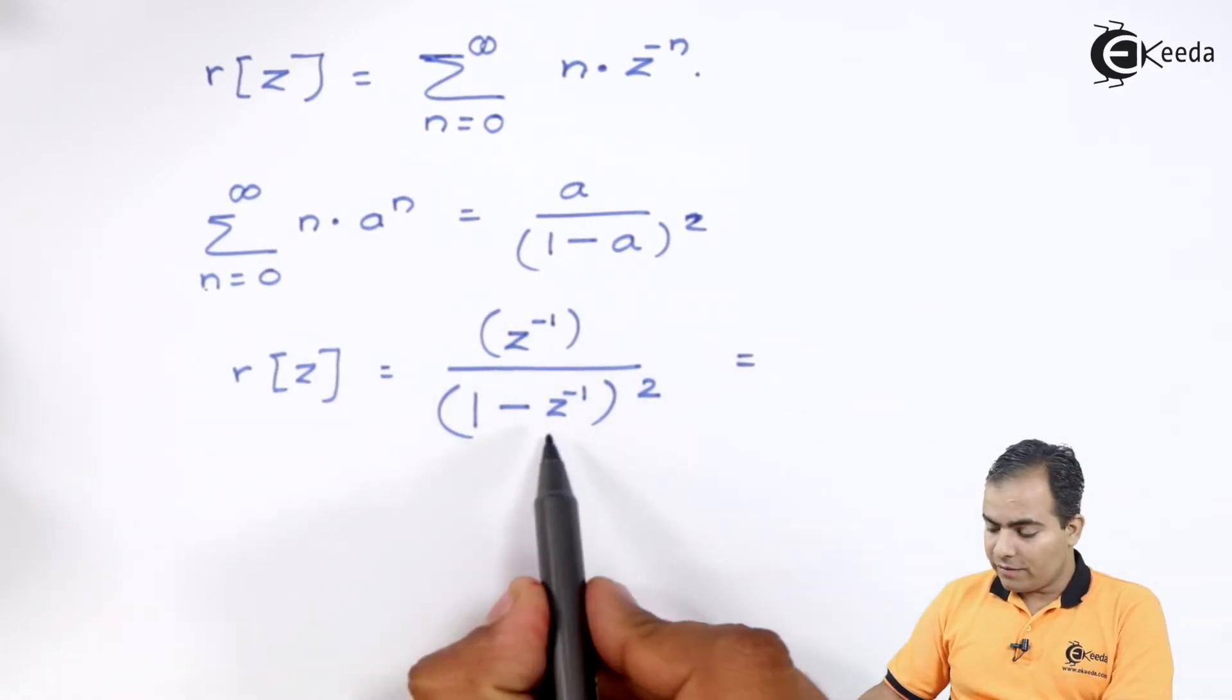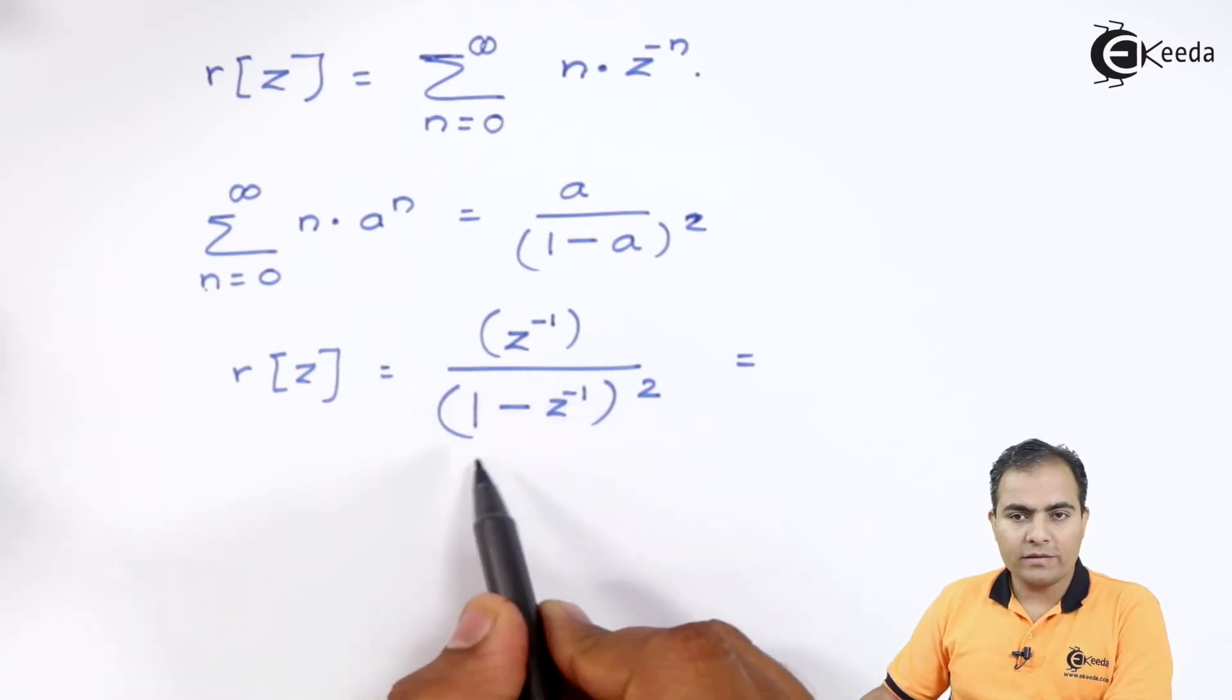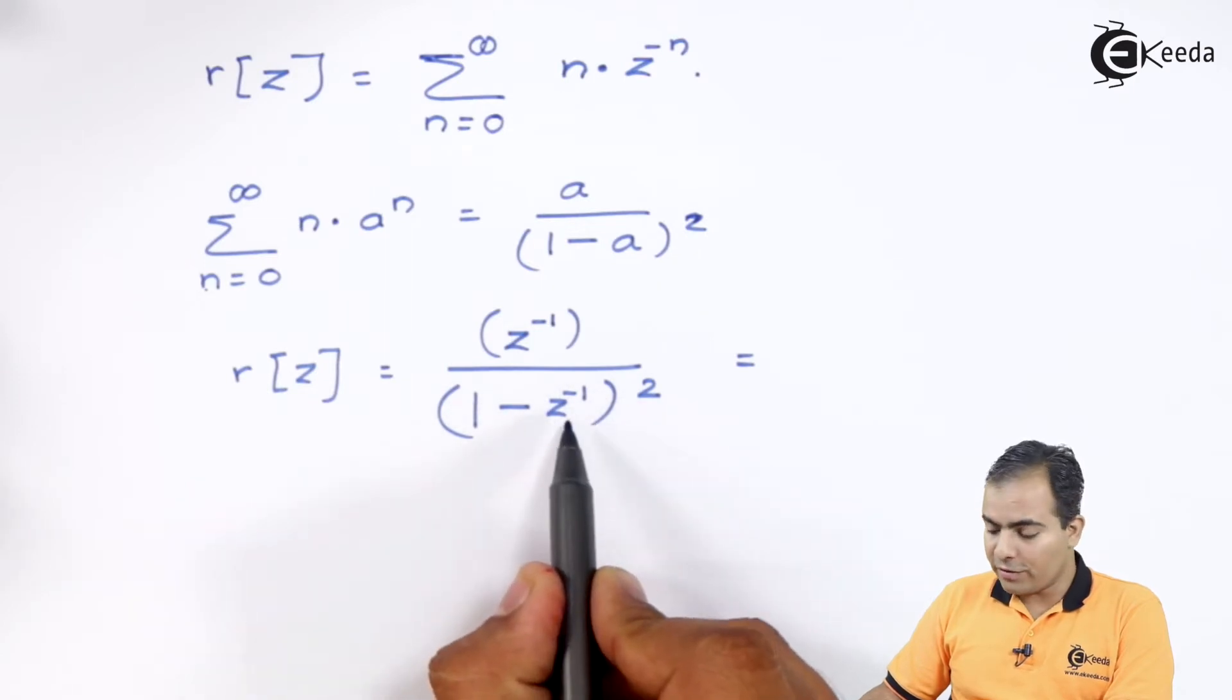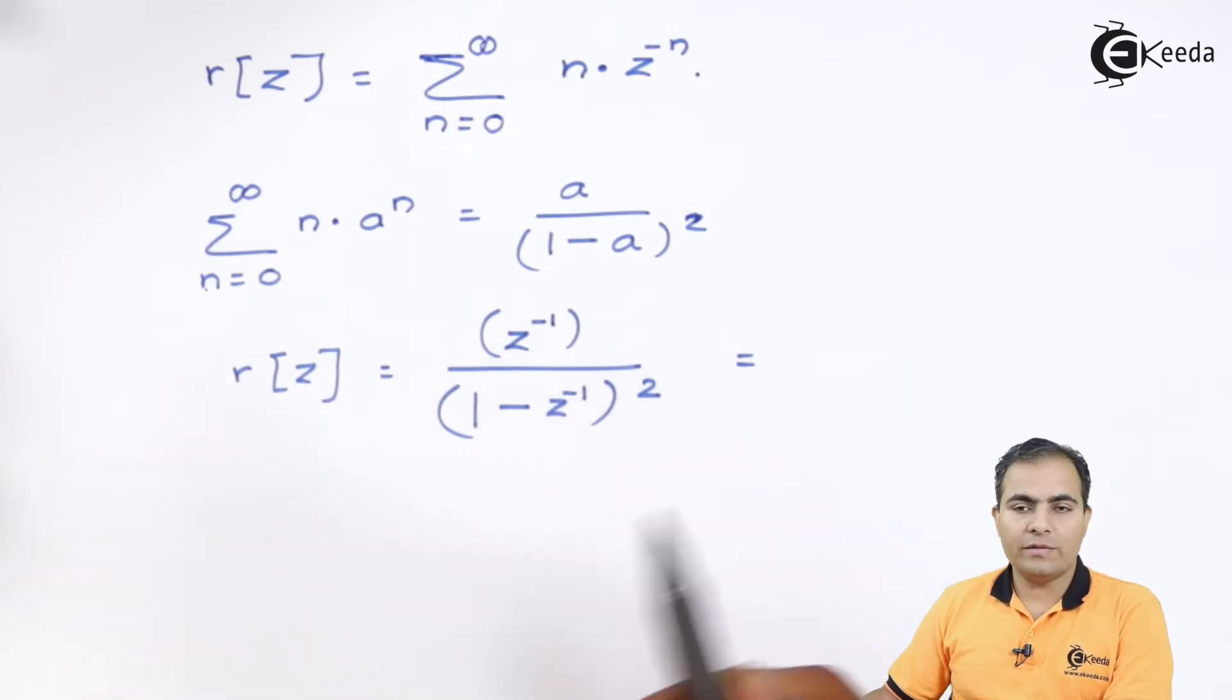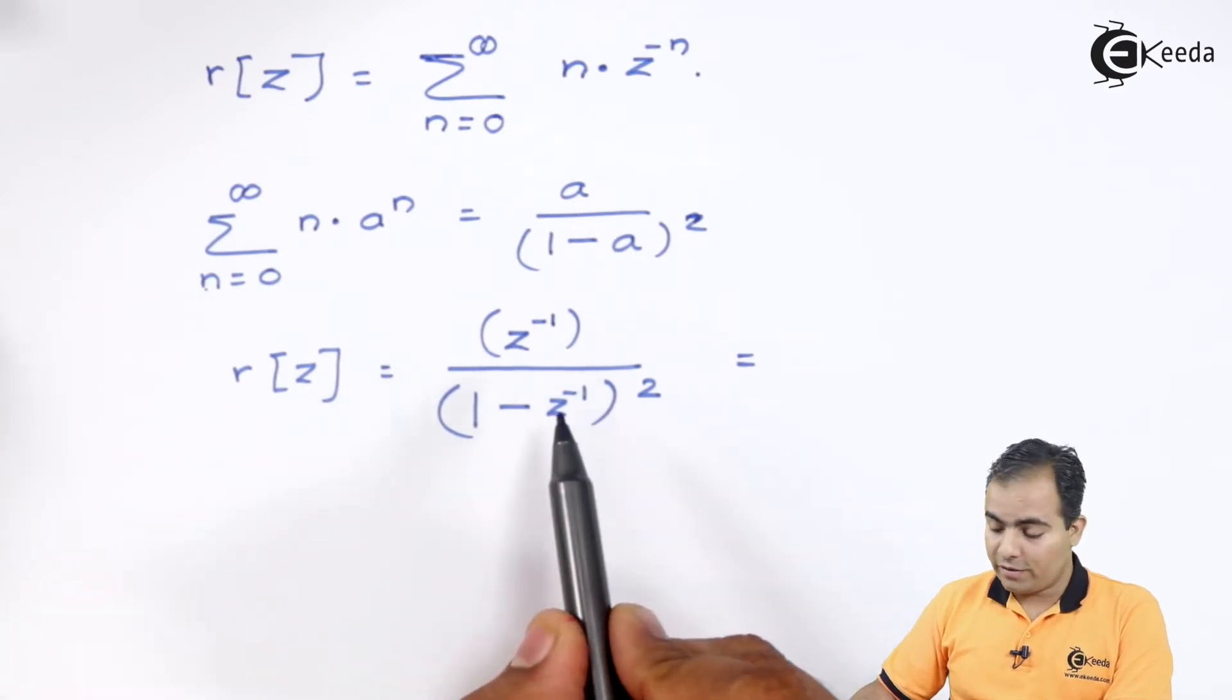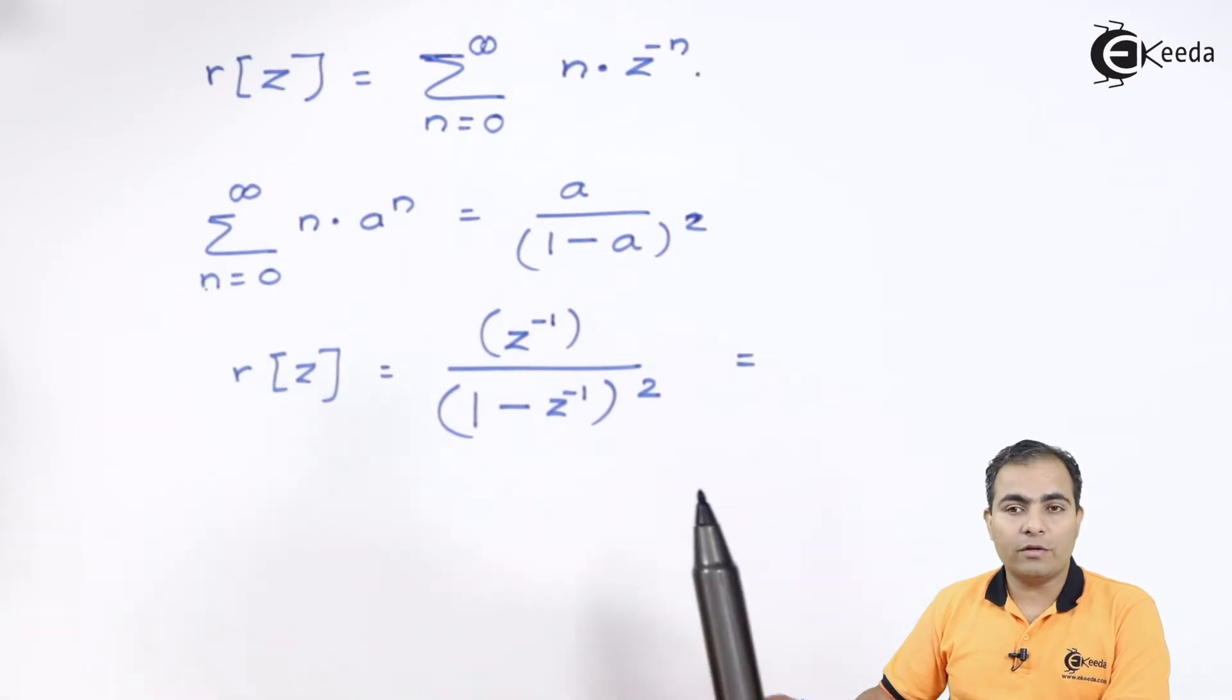Important one is basically inside this bracket we have z to the power minus 1. If I open the square then what we will get? z to the power minus 2 will be the highest power. Now, to remove z to the power minus 2 what is important? We have to multiply numerator and denominator by z to the power plus 2.